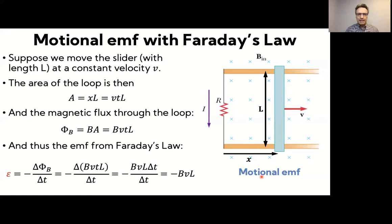And so that minus sign essentially tells us that the current will flow counterclockwise in this case. If the current is going counterclockwise, our right-hand rule tells us that the magnetic field will point out of the page. And so that opposes the increase in flux.